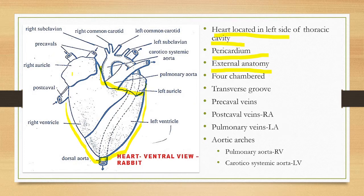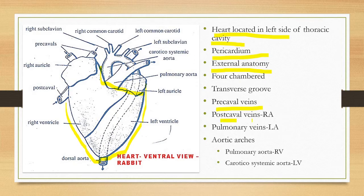The right auricle receives two veins called the pre-caval veins, also called the superior vena cava, which are two in number. There is another vein called the post-caval vein, or inferior vena cava. All three open into the right auricle. The left auricle receives the pulmonary veins.